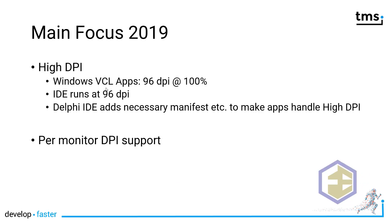High DPI is defined as follows: a normal Windows VCL app runs at 96 DPI, meaning at 100%. The IDE itself also runs at 96 DPI. However, if you buy a new Surface, for example, that screen most likely runs at a zoom level of 150 or 200.